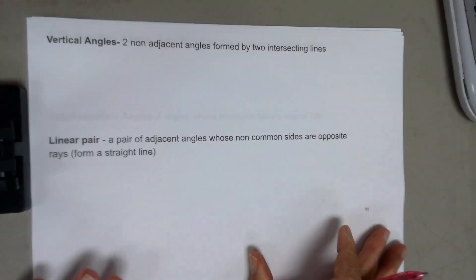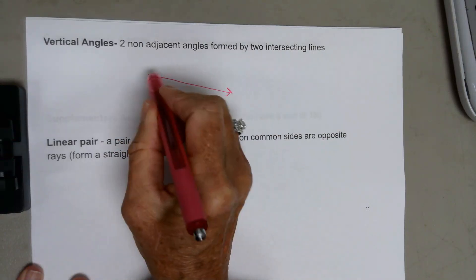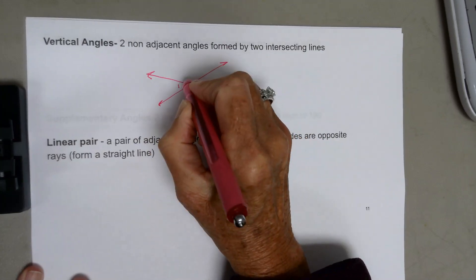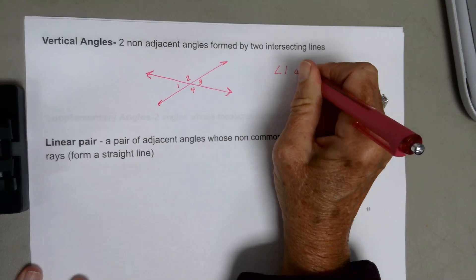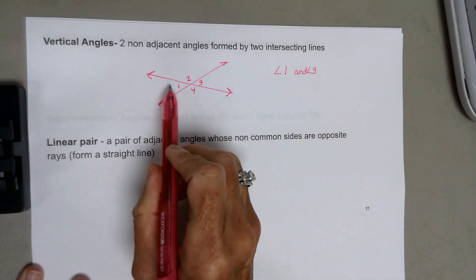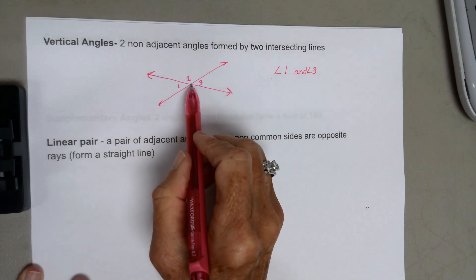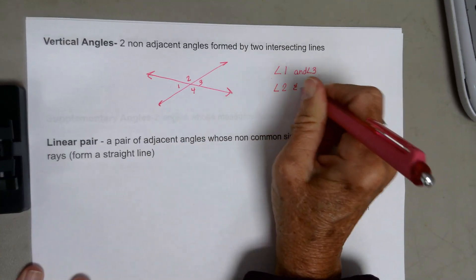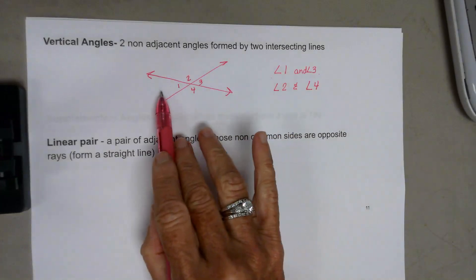Vertical angles are two non-adjacent angles formed by intersecting lines. Numbering the angles: angle 1 and angle 3 are vertical angles — right across from each other, sharing a common endpoint but no common sides. Angle 2 and angle 4 are also vertical angles.